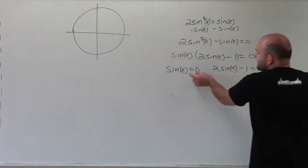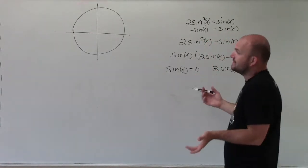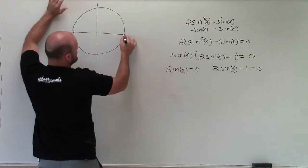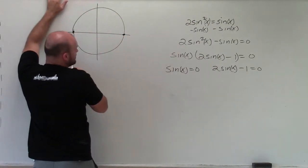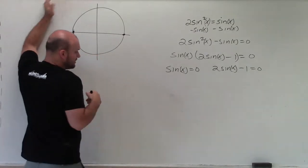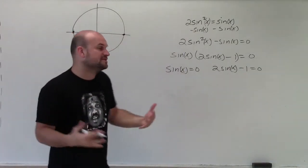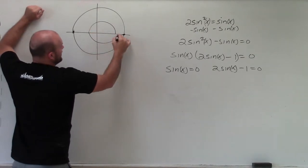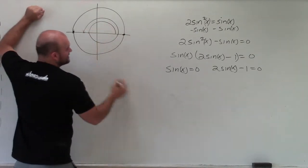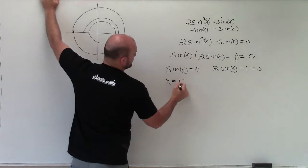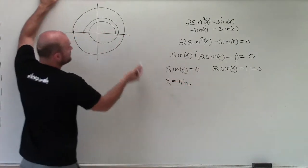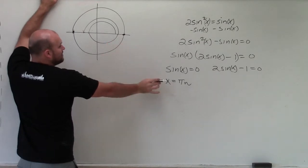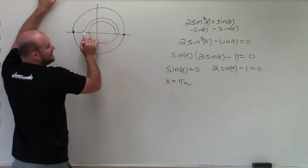So when is sine of x equal to 0? Well, sine of x is equal to 0. Obviously, remember sine is on your y-axis. It's only going to equal 0 at these two points. Since we're looking at all of the solutions, we know it's going to be at 0 and at pi, then at 2 pi, and at 3 pi. So I can say x is equal to pi n, where n equals 0 is going to give us the angle 0. When n equals 1, it's going to equal pi.